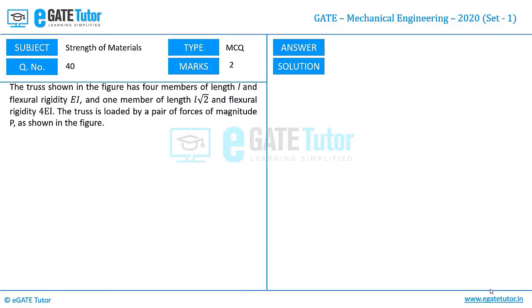The truss shown in the figure has four members of length L and flexural rigidity EI, and one member of length L√2 and flexural rigidity 4EI. The truss is loaded by a pair of forces of magnitude P as shown in the figure.